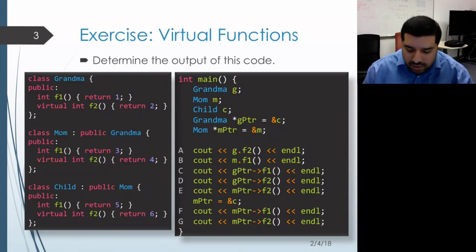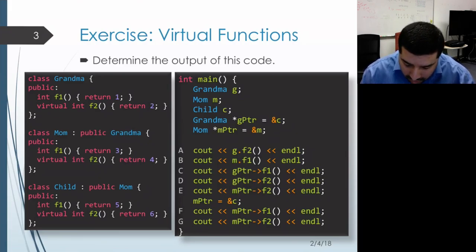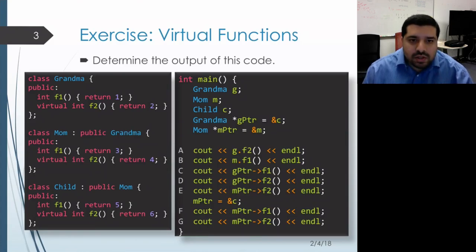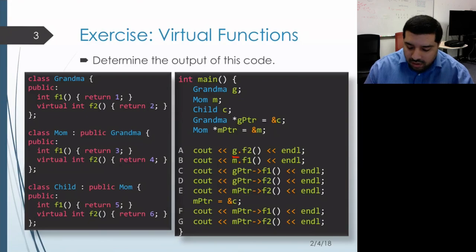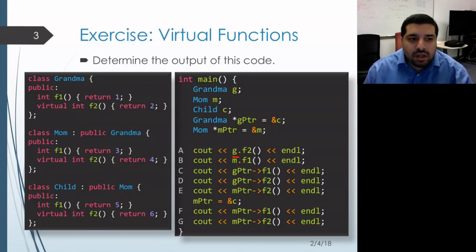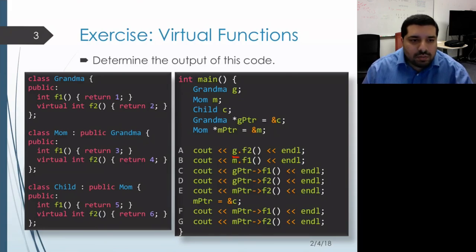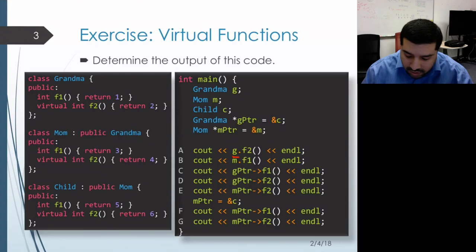Let's take a look at the first print statement. The receiver here is actually just a grandma object without any indirection whatsoever. So it's actually irrelevant whether or not the function is virtual, because the static and dynamic type are exactly the same. So whether we have static binding versus dynamic binding, it's going to find the same member function. Our type is grandma, so it's going to find the F2 function within grandma, which gives us two. So that's what gets printed out.